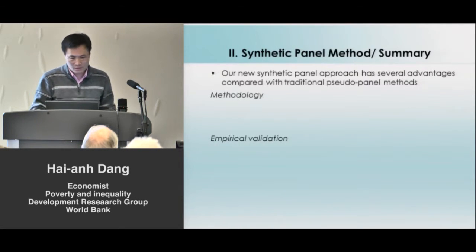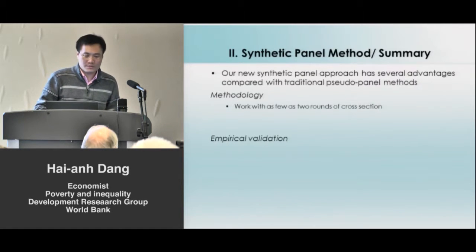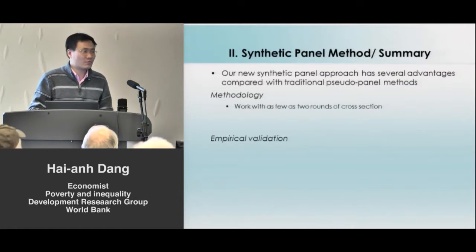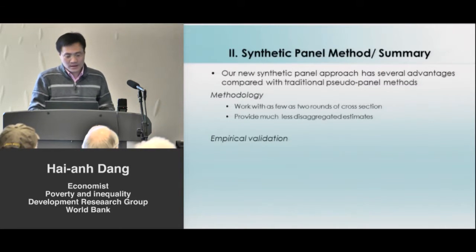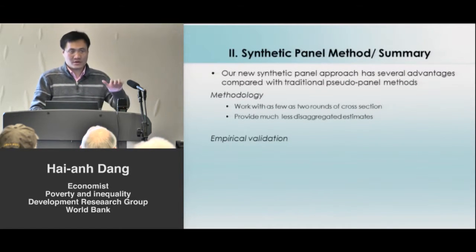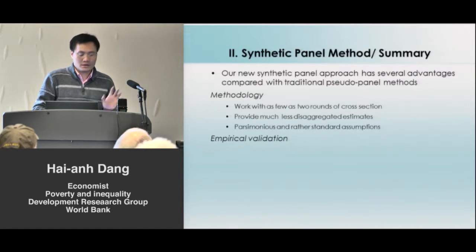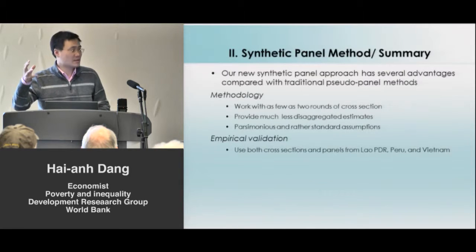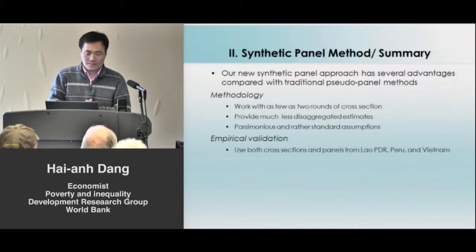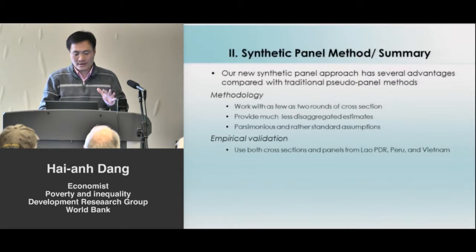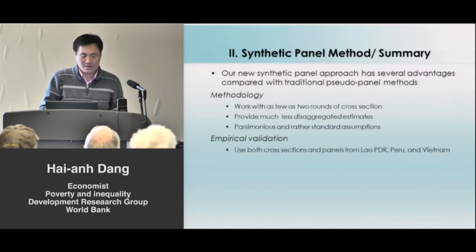Compared to traditional pseudo-panel methods, our method can work with as few as two rounds of cross-sectional survey data, whereas traditional pseudo-panel methods need a dozen survey rounds. We can look at more disaggregated results for different population groups, and we make rather standard assumptions. In the two papers I mentioned, we validated our method by comparing results with true panel data from developing countries like Laos, Peru, and Vietnam.